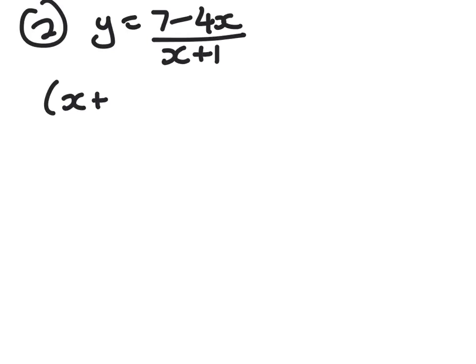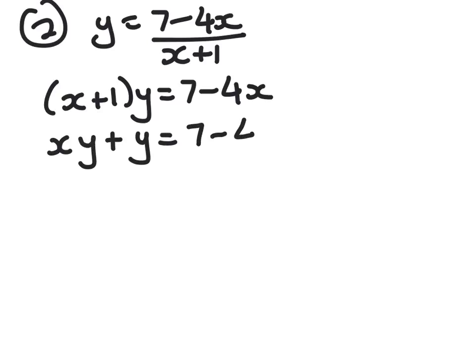Okay, so number 2. Y equals 7, take away 4x, over x plus 1. Cross-multiplying, I get x plus 1 times y equals 7 minus 4x. Expanding gives us xy plus y equals 7 minus 4x. Collecting up x terms gives me xy plus 4x equals 7, take away y.